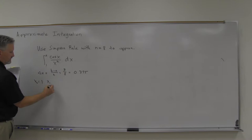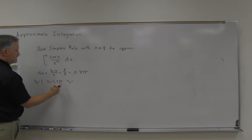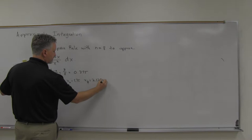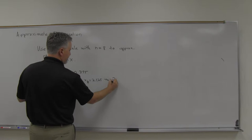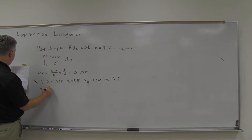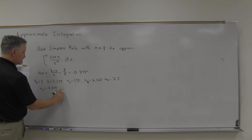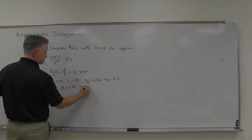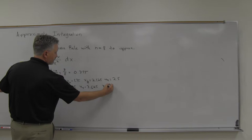So x0 is just a, so it's 1. x1, then add delta x to that: 1.375. x2, add 0.375: 1.75. x3, add 0.375: 2.125. x4, add 0.375: 2.5. x5, add 0.375: 2.875. x6, add 0.375: 3.25. x7: 3.625. And then x8 is 4.